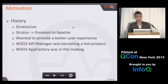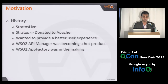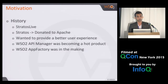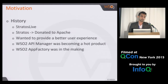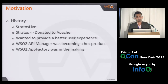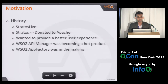Since Stratos 2.0 was successful and gaining momentum, they decided to donate it to Apache, and it became Apache Stratos. Once we donate something to Apache, we can't use those names and trademarks, so we had to shut down Stratos Live. At the same time, we were looking at providing a better user experience, and the API Manager product was becoming popular. We wondered: what if we bring the API Manager product to the cloud?